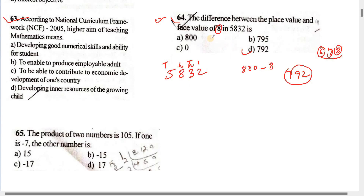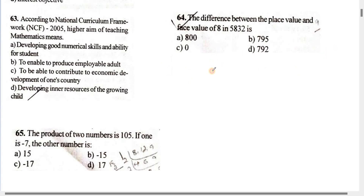To solve the question: suppose the number is 6, 5, 8, 9, 4. Find the difference between place value and face value of 5. The place value of 5 is 5,000. The face value is 5. So the difference is 5,000 minus 5, which equals 4,995.